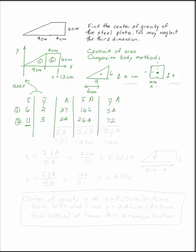So 6 times 27 is 162, 2 times 27 is 54, 11 times 24 is 264, and 3 times 24 is 72.